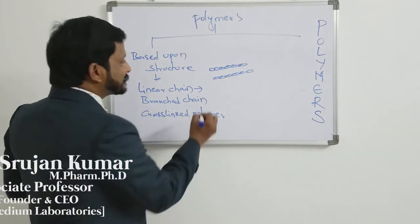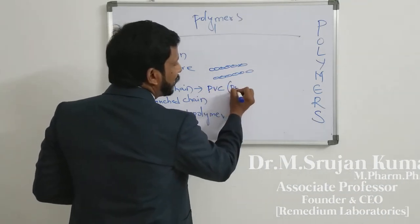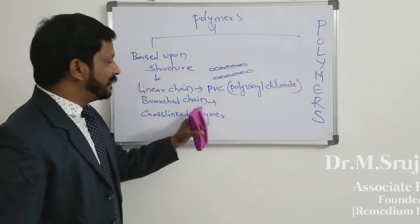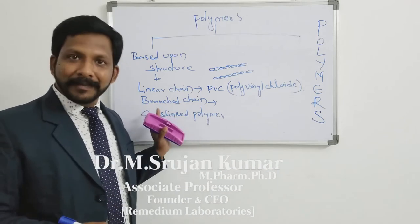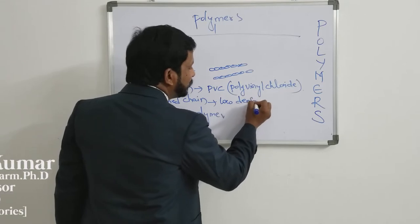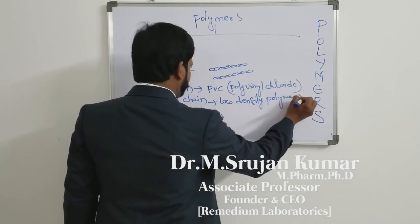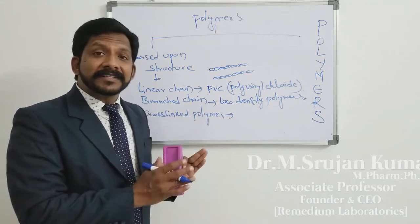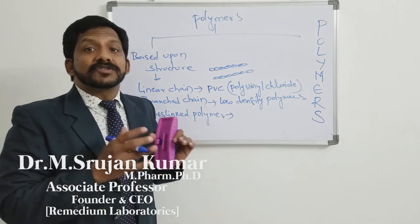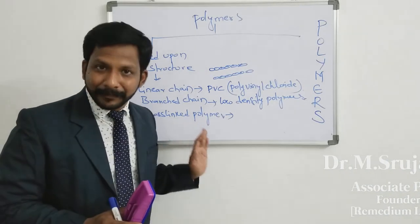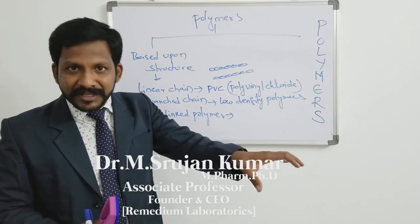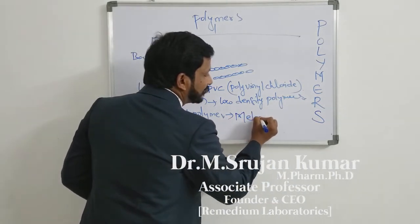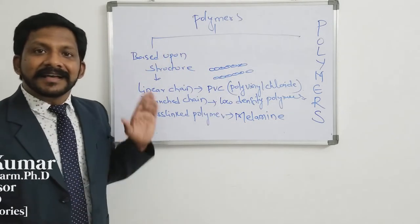The example for linear chain molecules is PVC, polyvinyl chloride. Next, what do you mean by branched chain? Linear chain molecules containing branches are called as branched chain polymers. Examples are low density polymers. Next, cross link polymers — polymers prepared from bifunctional and trifunctional monomers with strong covalent bonds are called as cross link polymers. The example is melamine. This is the second type of classification.